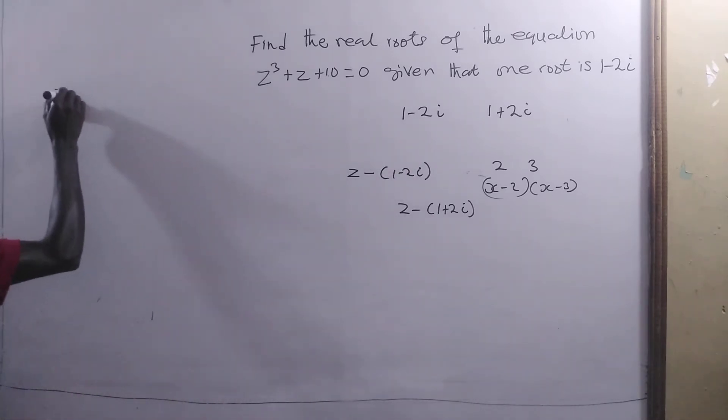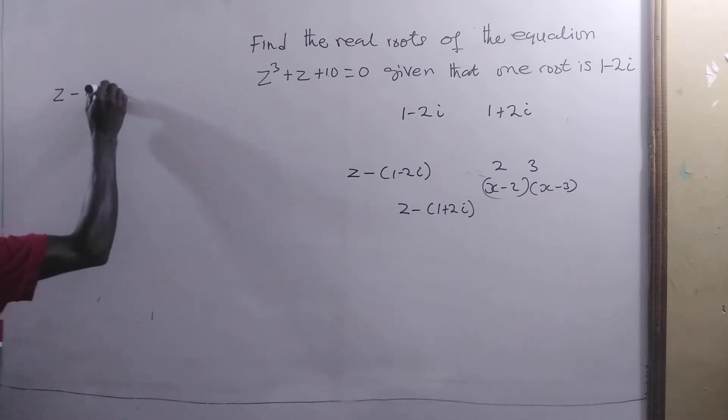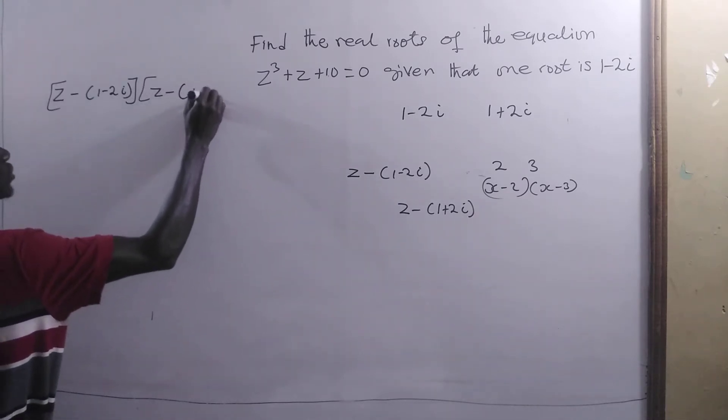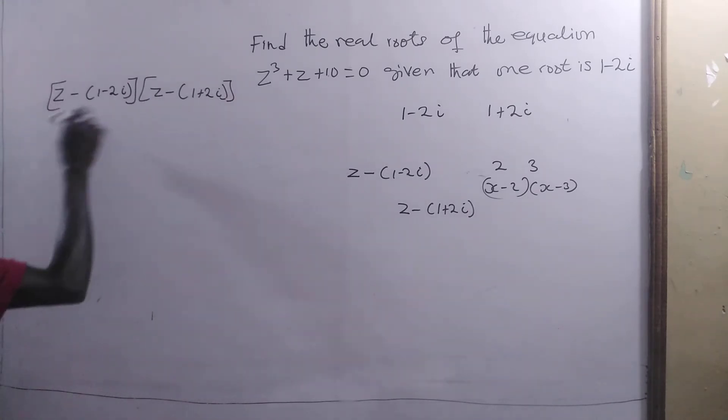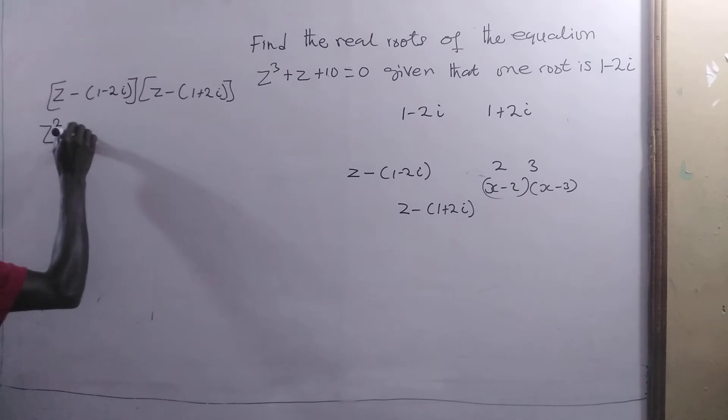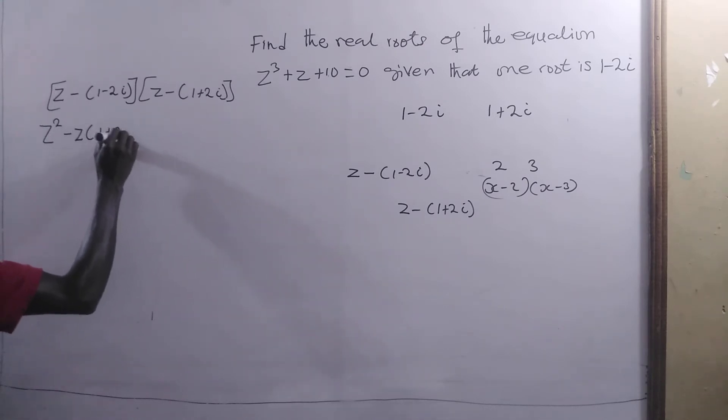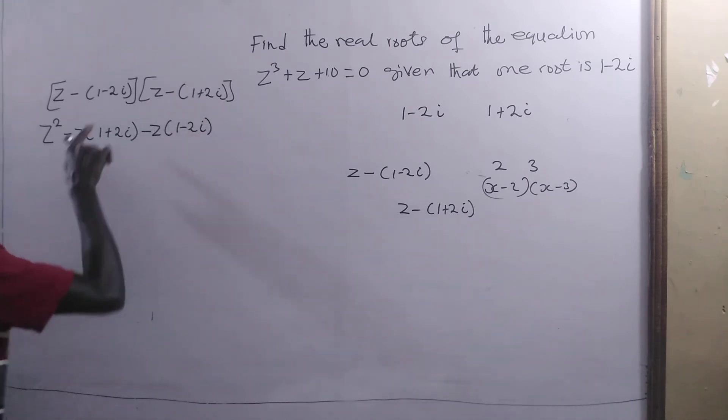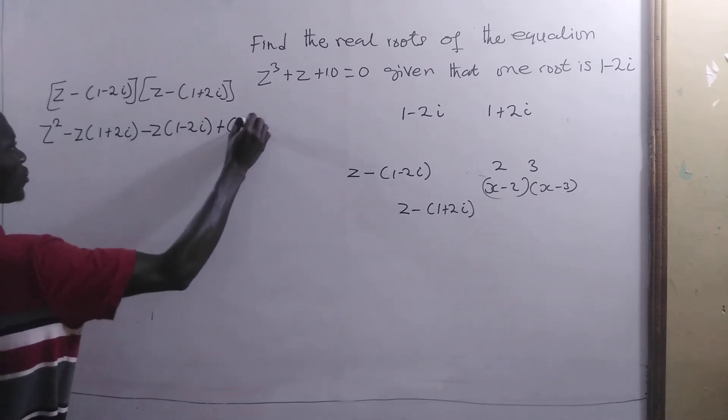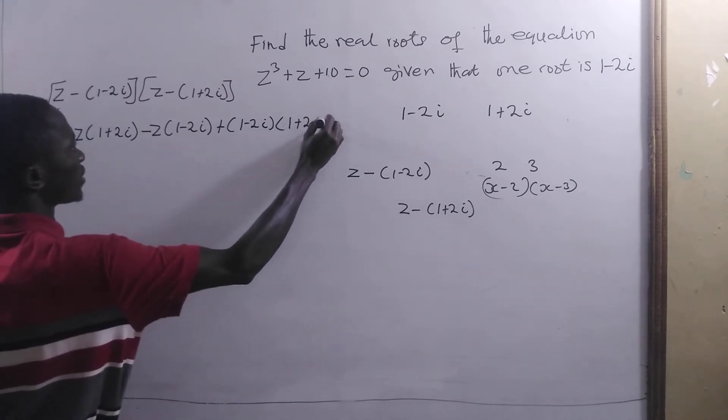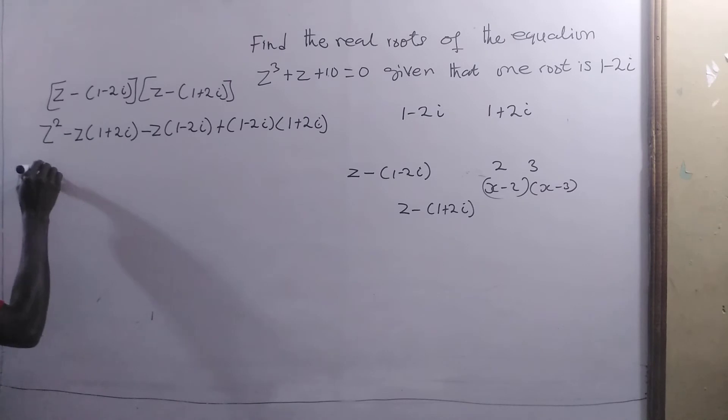So let's take [z - (1 - 2i)] times [z - (1 + 2i)]. We have z times z would give z². We are going to get -z(1 + 2i). Then we take -z times (1 - 2i) times (1 + 2i), and this will be z² - z - 2zi - z + 2zi.